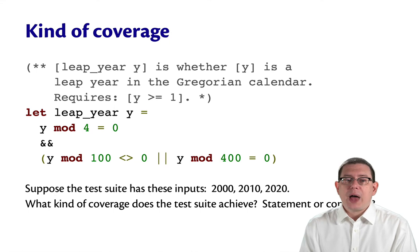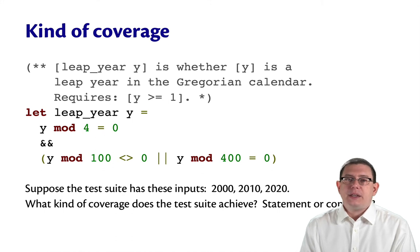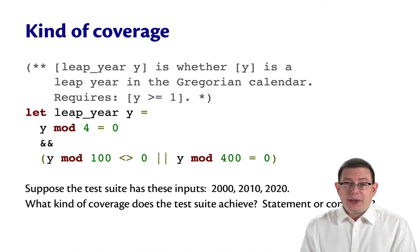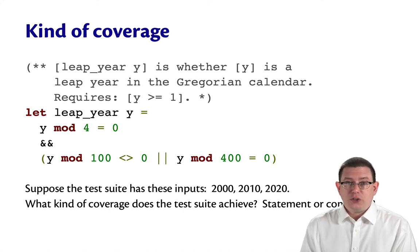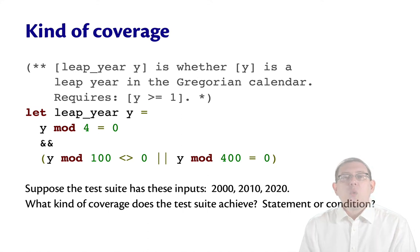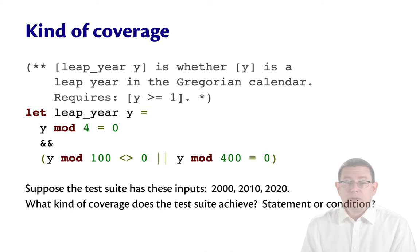Suppose you were trying to do glass box coverage of this leap year function, which determines whether a year y is a leap year in the Gregorian calendar. The implementation is based on boolean operators. Suppose you have a test suite that already tests the inputs 2000, 2010, and 2020. What kind of coverage does that test suite achieve — is it statement coverage or condition coverage?